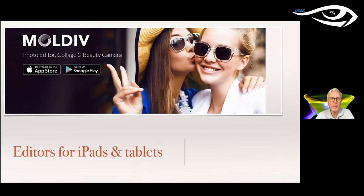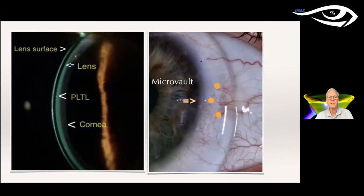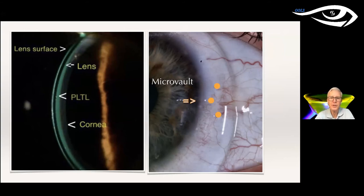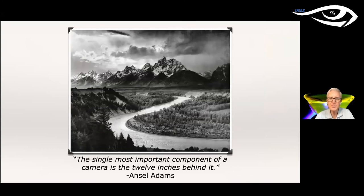There's a free little program I use called Moldiv — approved for Apple and Google. You can mark up images, write on them, put illustrations on them. You can even make a collage with one picture containing four or five individual pictures. It works really well and it's free. We started off with Ansel Adams, and he also said: 'The single most important element of a camera is the 12 inches behind it.' Think about your picture.